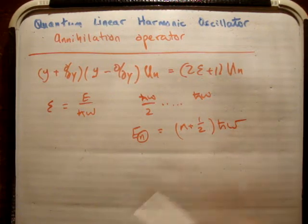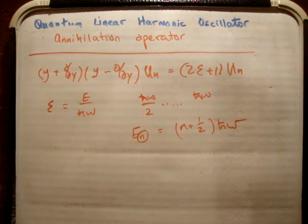So that means the energy of the nth level equals n plus 1/2 times h-bar omega. That should make sense to you, because if our base level is 1/2 h-bar omega and we keep adding 1 h-bar omega, then we get n plus 1/2.